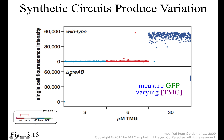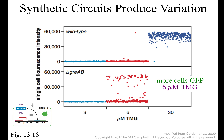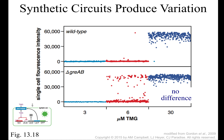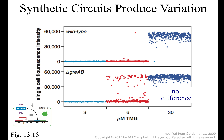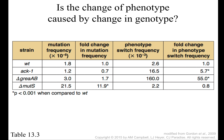In a mutant version of these bacteria — one that tends to make mistakes when it copies its DNA — at low concentration of TMG it's still off, but at medium concentration there are a lot more cells that randomly turn on, and at high concentration they turn on just like wild type. So depending on how many mistakes are made when copying the genome, that can affect how often you randomly turn something on and also the concentration of substrate needed.